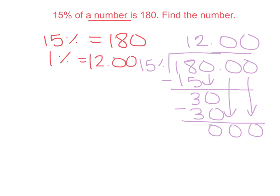But we are looking for 100% — we are looking for the whole amount. So for 100%, we would take our 1% and multiply it by 100. So we would get 1,200.